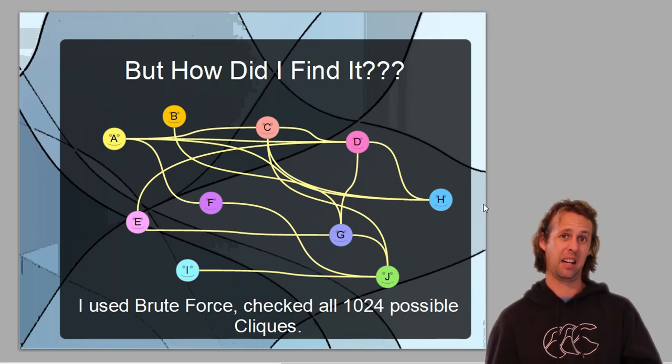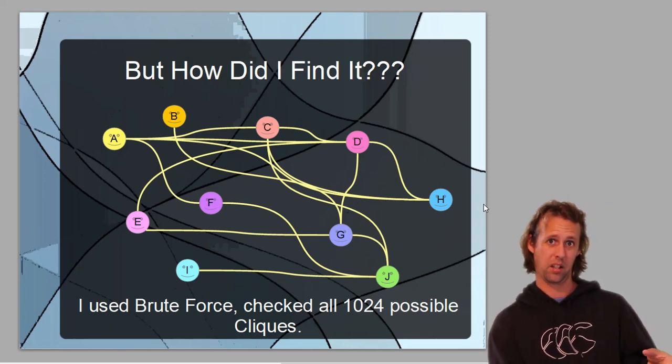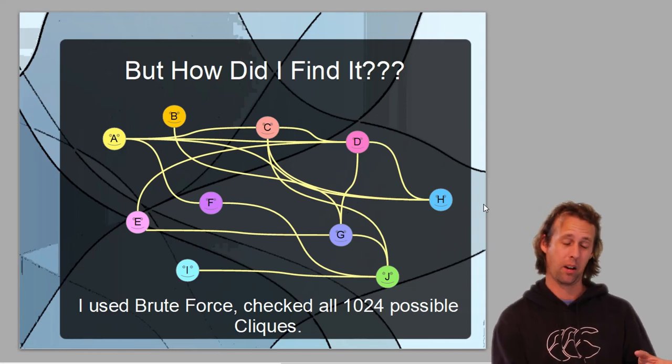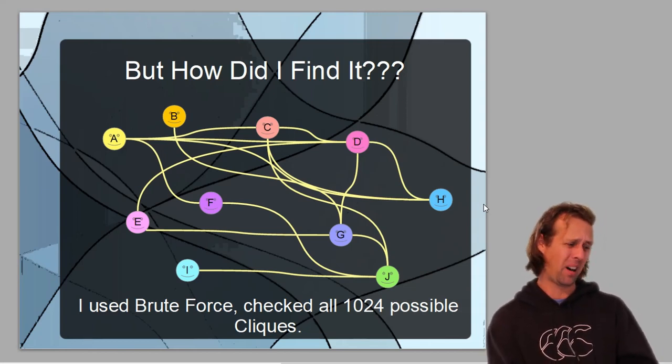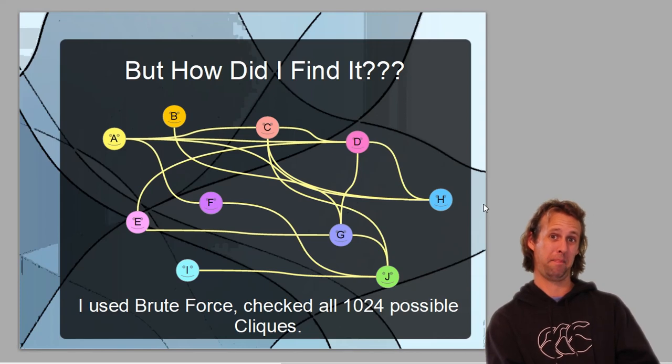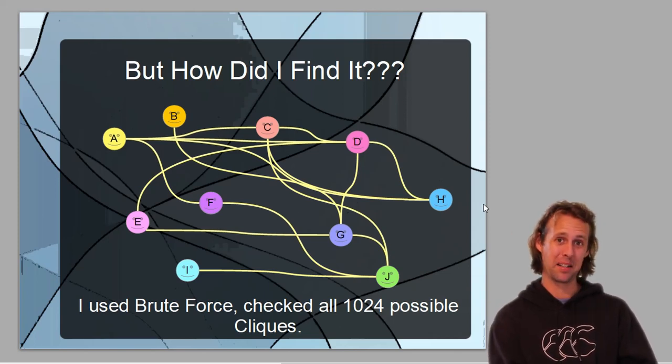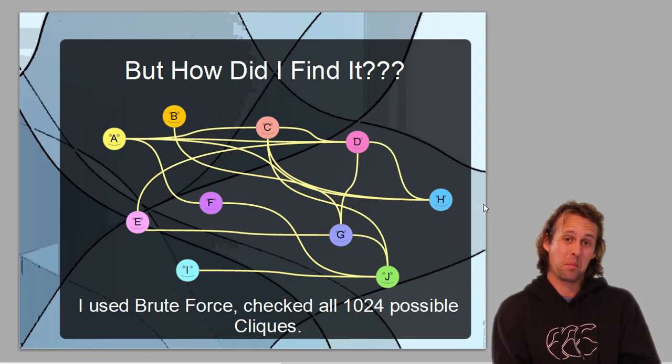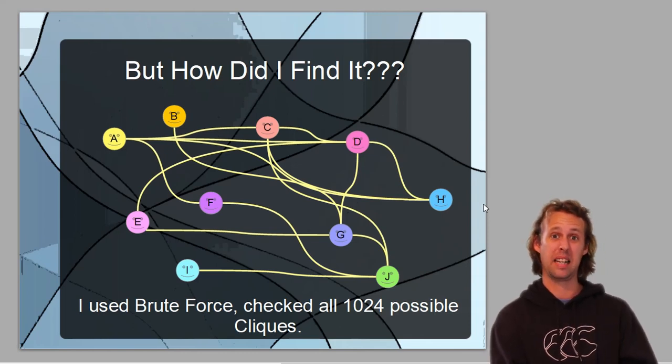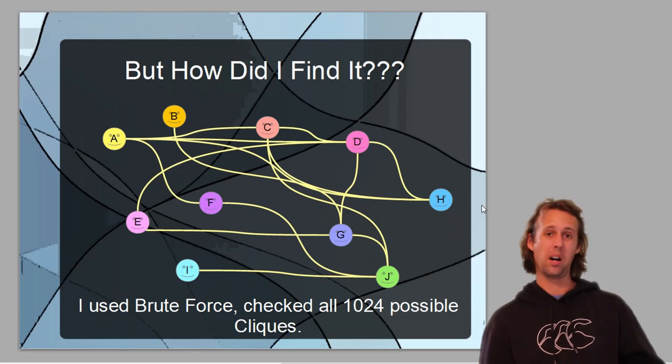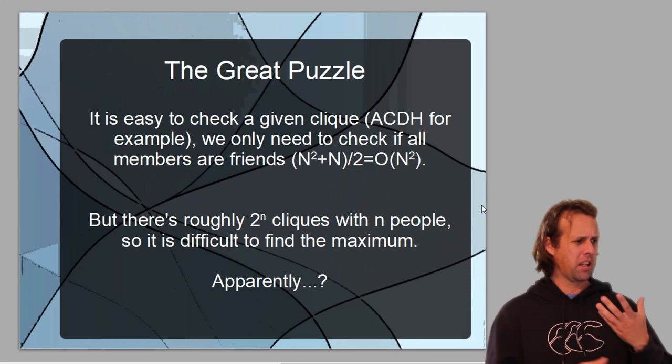But the question is, how did I find that four-clique? I didn't just look at this chart and figure it out with my eyesight. That would be tedious. I actually used a brute force method because finding the largest maximal clique is NP. It's one of those interesting puzzles that for one reason or another seems to increase in difficulty exponentially, even though checking results is very, very easy. In order to find that clique of four, I actually brute forced and checked all 1024 possibilities.